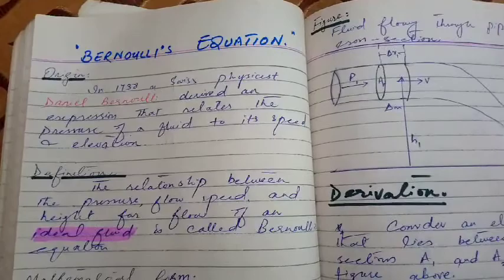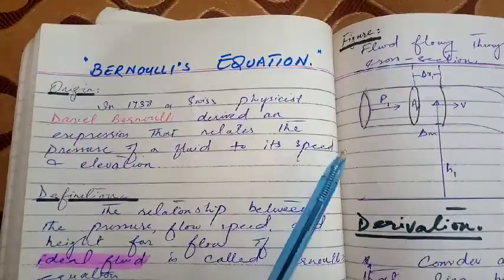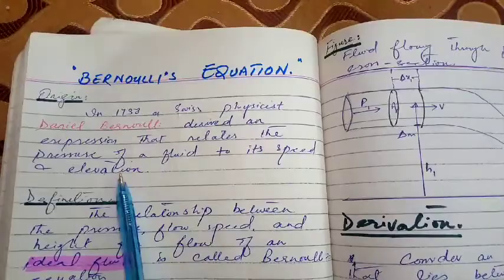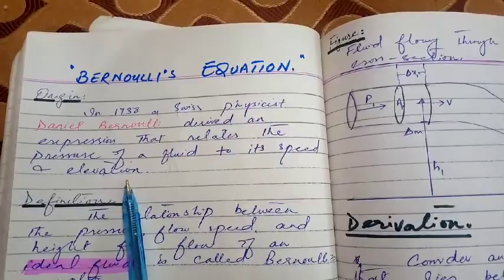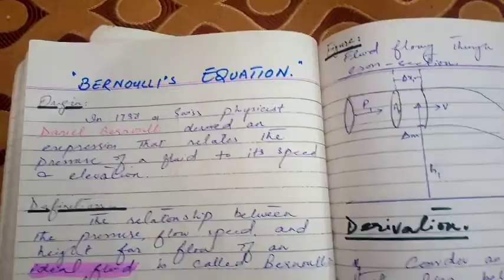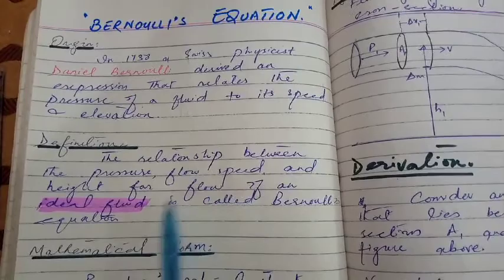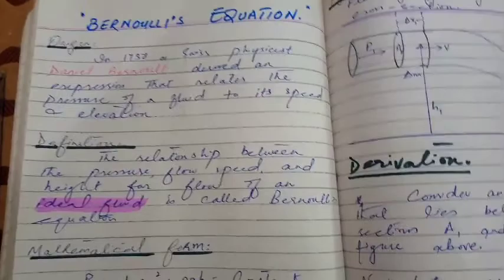Bernoulli's equation has its origin in 1738 when Swiss physicist Daniel Bernoulli derived it. Basically, this equation relates the pressure of a fluid, its speed, and elevation. Elevation means height with respect to some fixed reference point. So the relationship between pressure, flow speed, and height for the flow of an ideal fluid is called Bernoulli's equation.